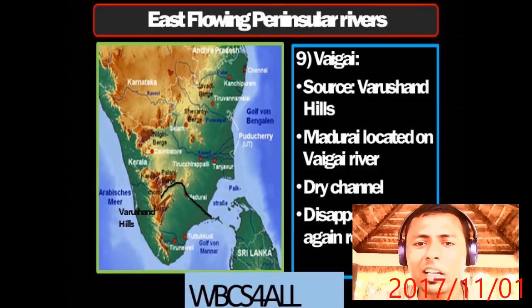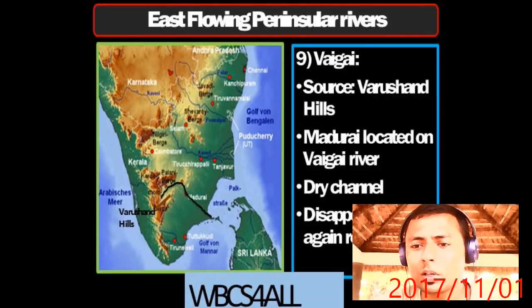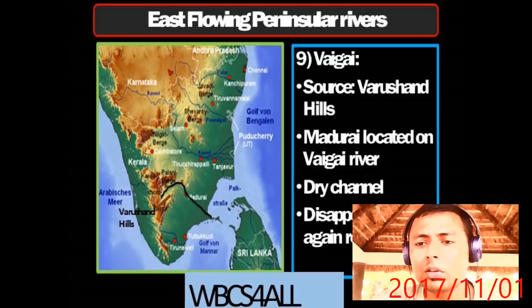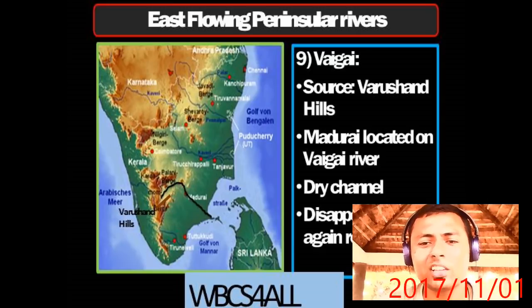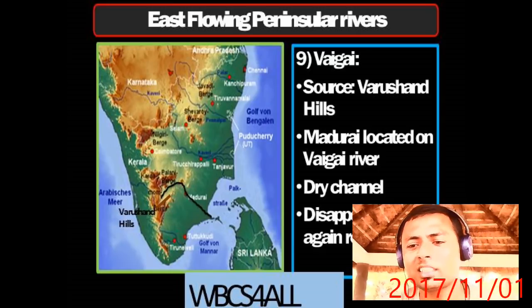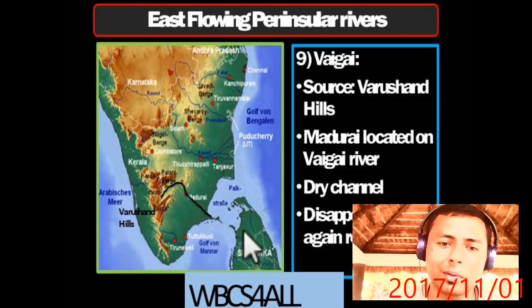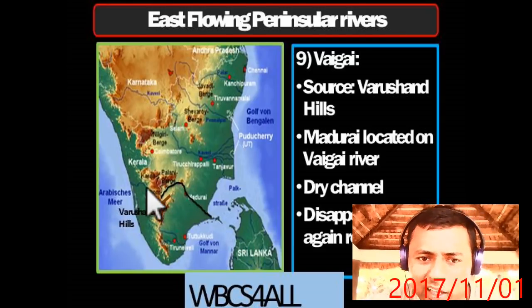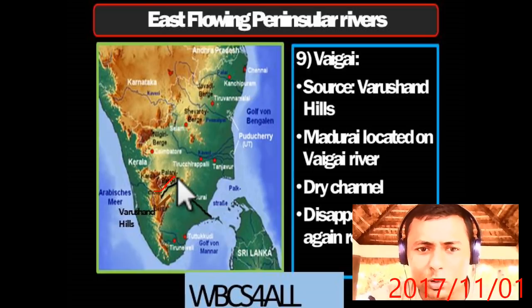Another important river is the Vaigai, sourced near Varushanad Hills. Madurai is located on the Vaigai. It is a dry channel that suddenly disappears and then reappears — this is an important fact that exam questions ask about.